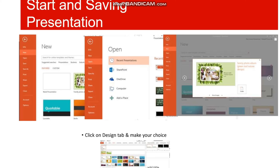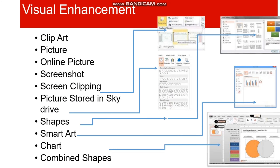Next is starting and saving a presentation. To open or save a presentation, go to the File tab — whether opening a blank presentation or an existing one, you always use the File tab. We can also insert objects in PowerPoint such as clip art, pictures, screenshots, online pictures, shapes, SmartArt, and other items.